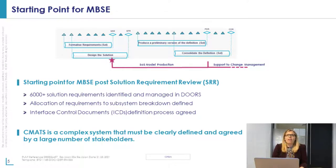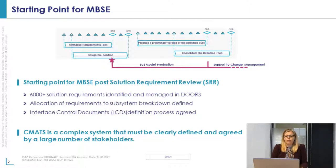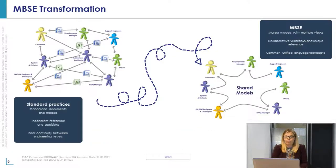Given where we were in the programme at the SRR stage, there was a large amount of system design work already done, which meant we couldn't use model-based systems engineering for requirements development itself. However, we saw value in producing a model that could define how the design actually met those requirements. Given the large number of dependencies even at a system of systems level, we needed to ensure those were agreed and understood by a large number of stakeholders, so we considered that producing a system of systems model with a defined level of completeness would provide long-term benefits for the project.